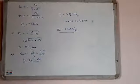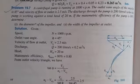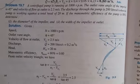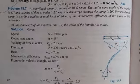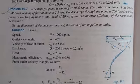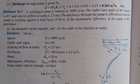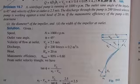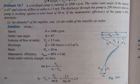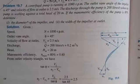Now we will take one more question. A centrifugal pump is running at 1000 RPM. The outlet vane angle of the impeller is 45 degree, and velocity of flow at outlet is 2.5 meter per second. The discharge through the pump is 200 liter per second when the pump is working against a total head of 20 meter.